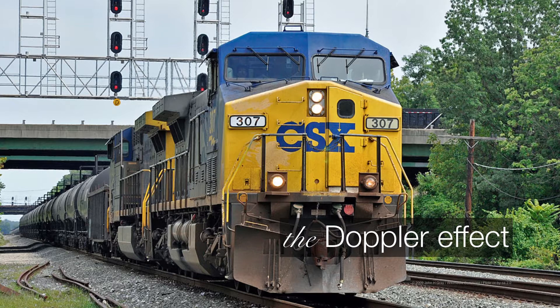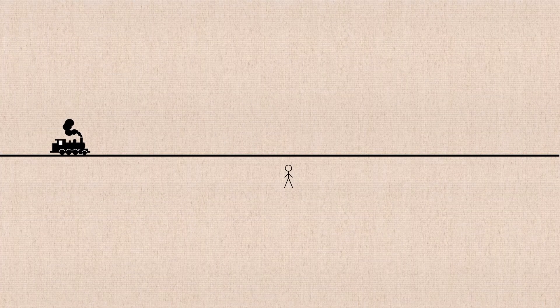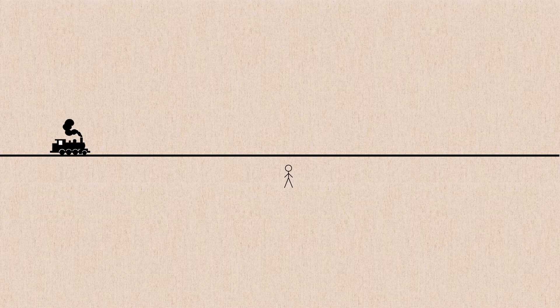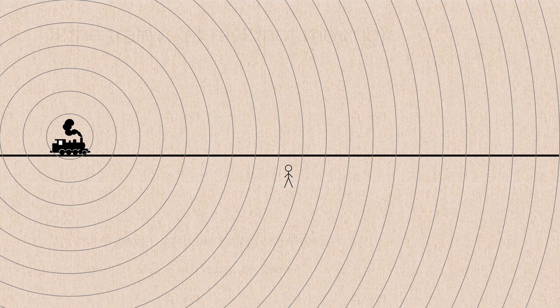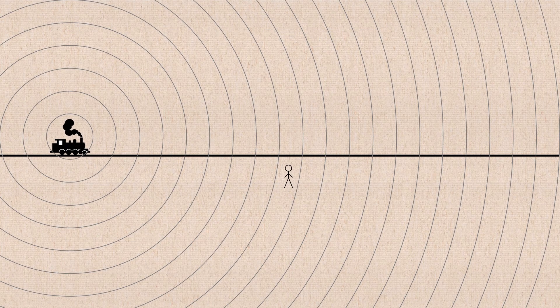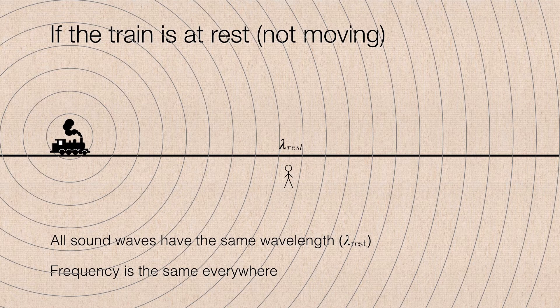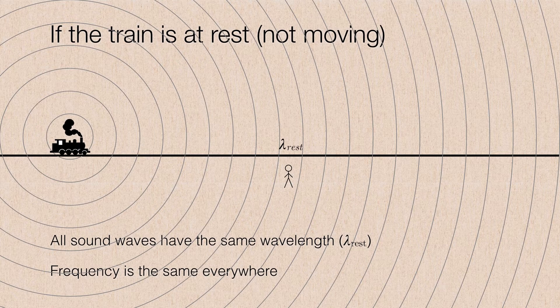So let's talk briefly about what that means for sound, and then we'll see how this applies to light. When you are standing by the railroad tracks, a train might blow its horn, and if it does, it's going to send out waves in all directions. And that means that the waves are going to have a characteristic rest wavelength. The wavelengths are going to be the same everywhere.